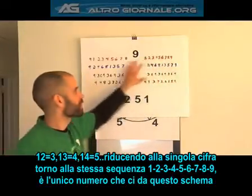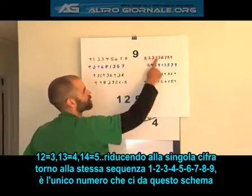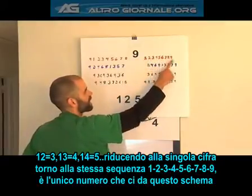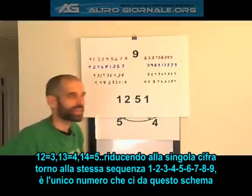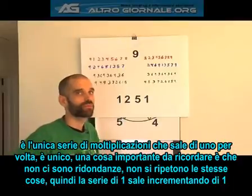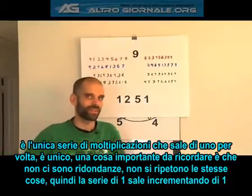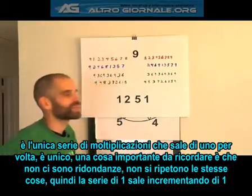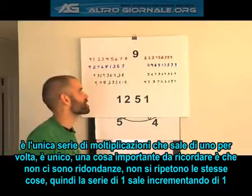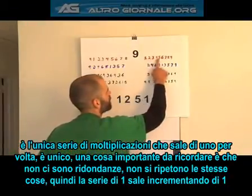No matter how far I multiply, when reducing to single digits, I'm constantly going to have this pattern: one, two, three, four, five, six, seven, eight, nine. That's the only number that will make that pattern. One is the only multiplication series which goes up in increments of one, so it's unique. One of the important things in this system to remember is that there's never any redundancy — it's never doing the same thing twice. One is the only number which goes up in increments of one.